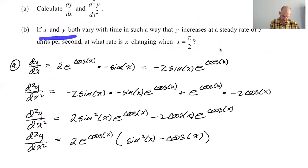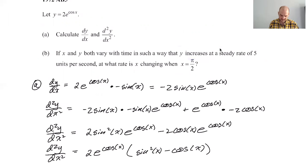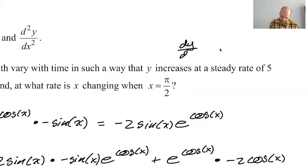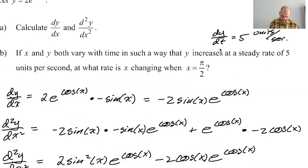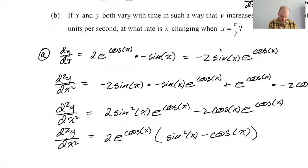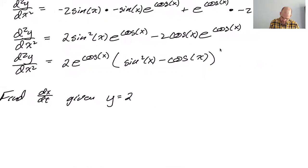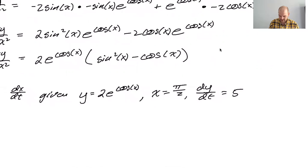Part B: If x and y both vary with time, so both x and y are functions of t, and y increases at a steady rate of 5 units per second, so that's telling us that dy/dt is equal to 5 units per second. Then at what rate is x changing when x is equal to π/2? So we want to find dx/dt. Find dx/dt given that y equals 2 e to the cosine of x, x is equal to π/2, and dy/dt is equal to 5.